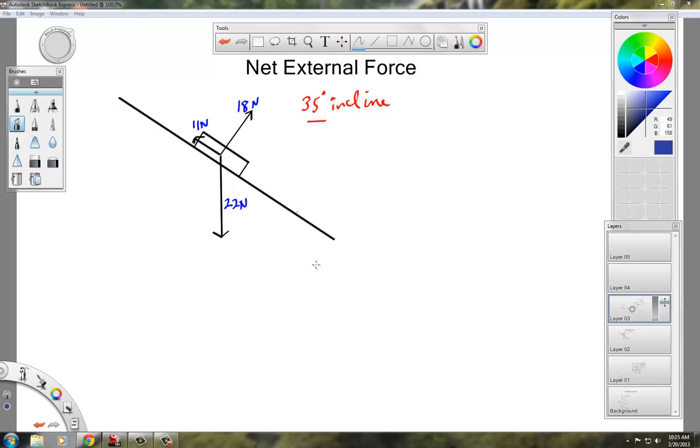Hello and welcome physics students. Today we're going to learn a net external force problem and a shortcut on how to do it. We're going to do this quickly today. Alright, so we've got a book sliding down a table and it's a 35 degree incline.